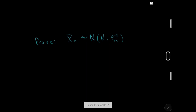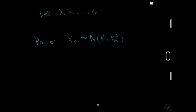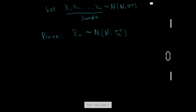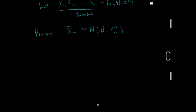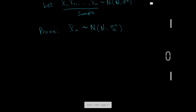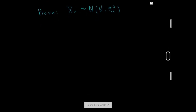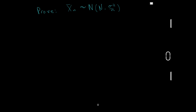Before we do the proof, we need the setup. We have x1, x2, ..., xn, which are normally distributed with some mean mu and some sigma squared. This is essentially our sample — each of the sample points or observations are normally distributed. We need to prove that the sample mean, the average of those sample points, is normally distributed with the same mu and variance sigma squared divided by the number of sample points.